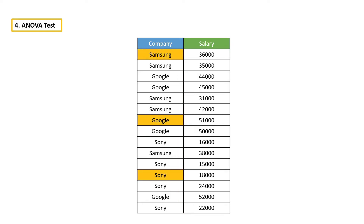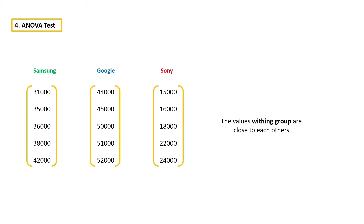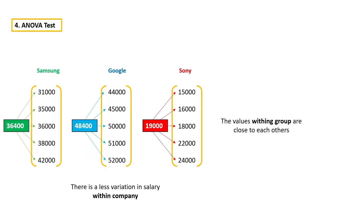There are three different companies. Let's take all three companies and their corresponding salary. To see the pattern clearly, let's sort the values. If you look at each group, the values within a group are close to each other. For example, if you take the mean of each group and compare it with the values, most of the values are close to its mean value, which indicates that there is less variation in salary within a company.